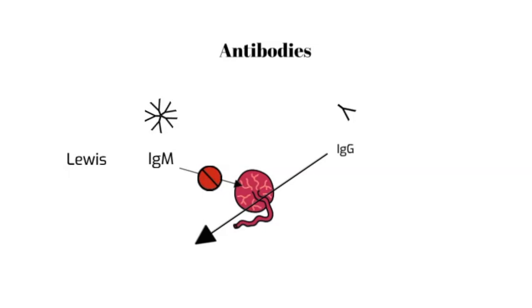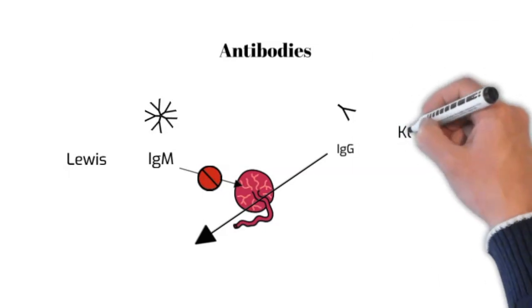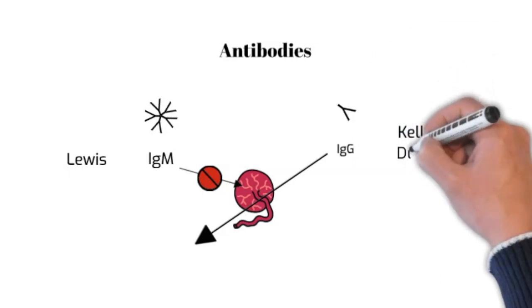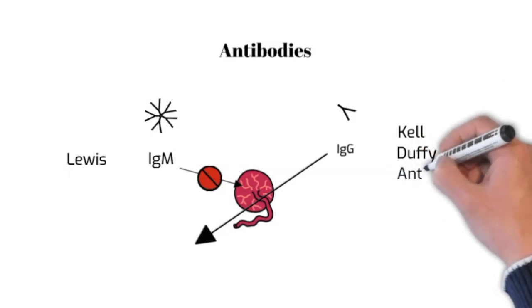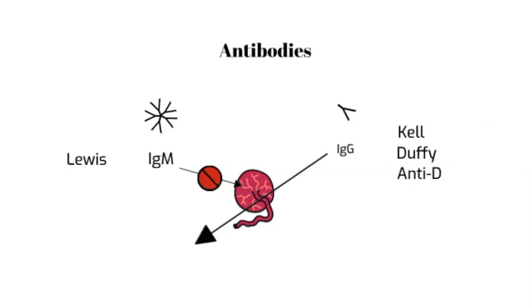And that's why IgG is clinically significant during pregnancy. An example of IgM antibody is Lewis antibody. Examples of IgG are anti-Kell, Duffy, and anti-D antibody, which is what we're discussing in this lecture. Lewis lives, Kell kills, and Duffy dies.